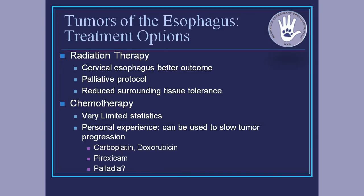Chemotherapy has limited statistics because these tumors are so rare. I treated a dog with a squamous cell in the esophagus with carboplatin — had somewhat of a response, stabilized the tumor — then followed with doxorubicin, kept it stable. The dog did pretty well for about three to four months on an NSAID, then stopped due to difficulty swallowing and poor quality of life. I think if we see these, it's not wrong to try — you want to get them a few months and shrink the tumor. Drugs like Palladia — toceranib — might also be an option, though information is limited. Prognosis is pretty poor long-term with most of these tumors, except for leiomyomas and leiomyosarcomas.